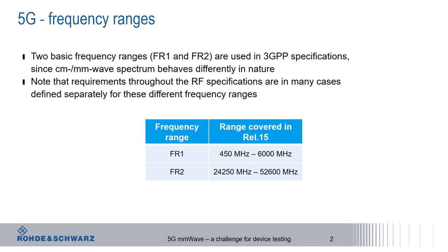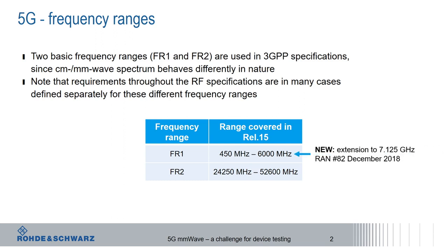Let's have a look at the different frequency ranges specified for 5GNR. There are basically two different frequency ranges: frequency range 1 with up to 6 GHz, and frequency range 2, which is the millimeter wave frequency range going from 24.25 GHz up to 52.6 GHz in Release 15. In December last year, there was a RAN meeting where they decided to extend frequency range 1 from 6 GHz up to 7.125 GHz.